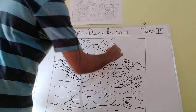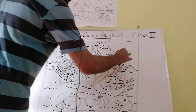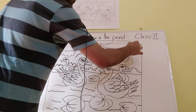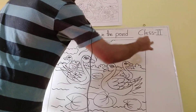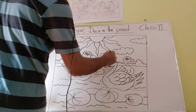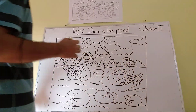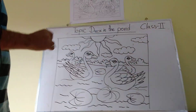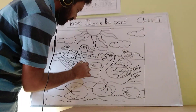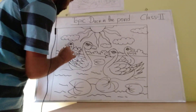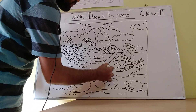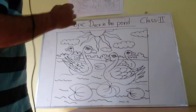It looks like a sunflower. We may use some clouds for this picture. And now if you give some little dots, it's looking nice.